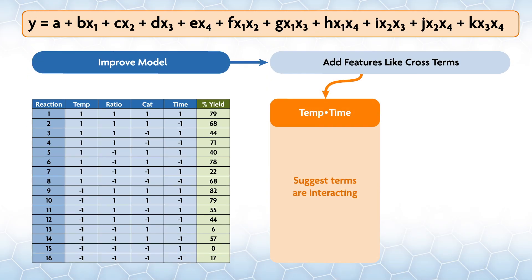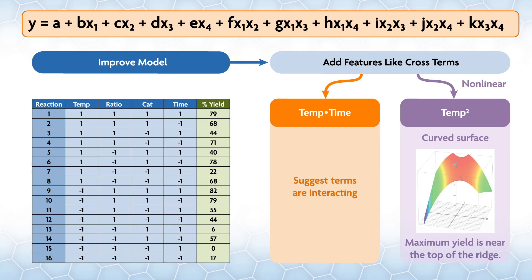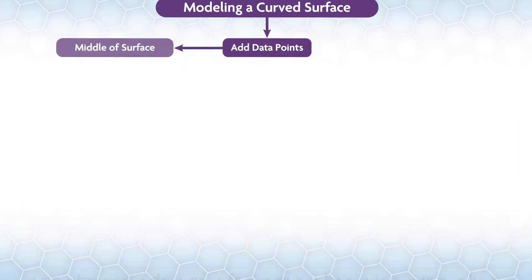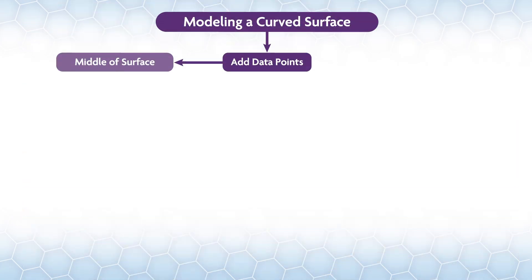In order to improve the model, you start adding additional features like cross terms, such as temperature times time, which suggests the terms are interacting. In addition, the terms don't have to be linear, so you can see if terms like temperature squared are significant. If these terms are included, you curve the surface, which can lead to peaks or more often ridges. Basically, if there is a ridge due to, say, time squared, it might indicate that both too short and too long of a time decreases the yield. The maximum yield is near the top of the ridge.